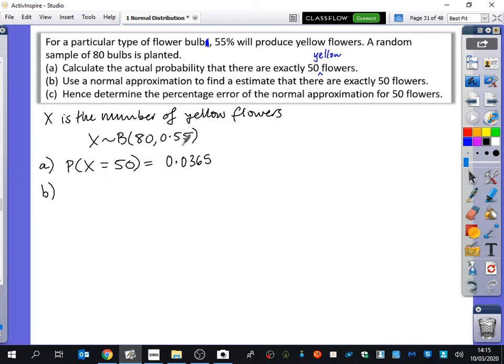We've said that X is binomially distributed like this. So Y would be normally distributed. Remember that it's NP and then NP times one minus P. So we know that the number of flowers that become yellow would be normally distributed. NP is going to be that times that, which is 44. And then you do 44 multiplied by 0.45, which is 19.8.